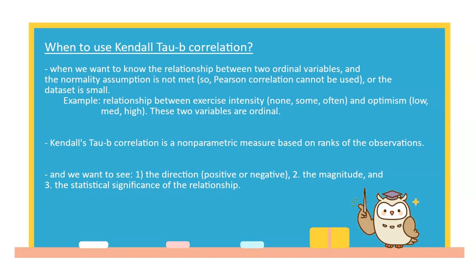For example, we want to know the relationship between exercise intensity and optimism. These two variables are ordinal, each with three levels.